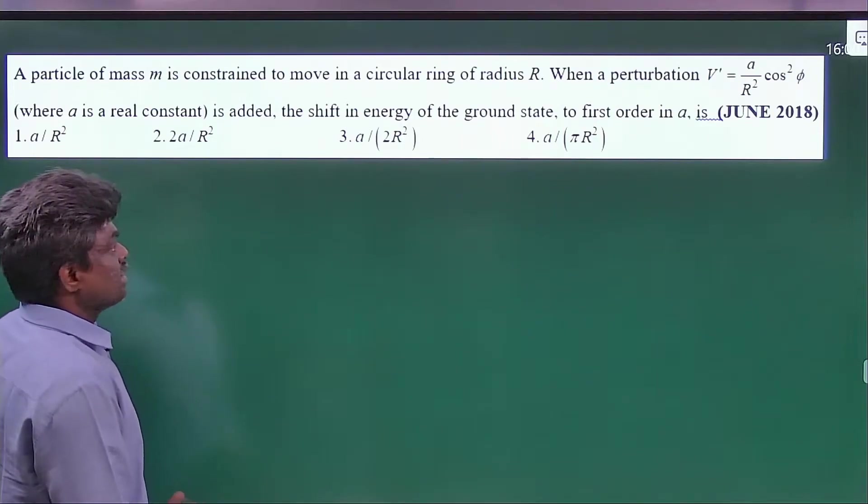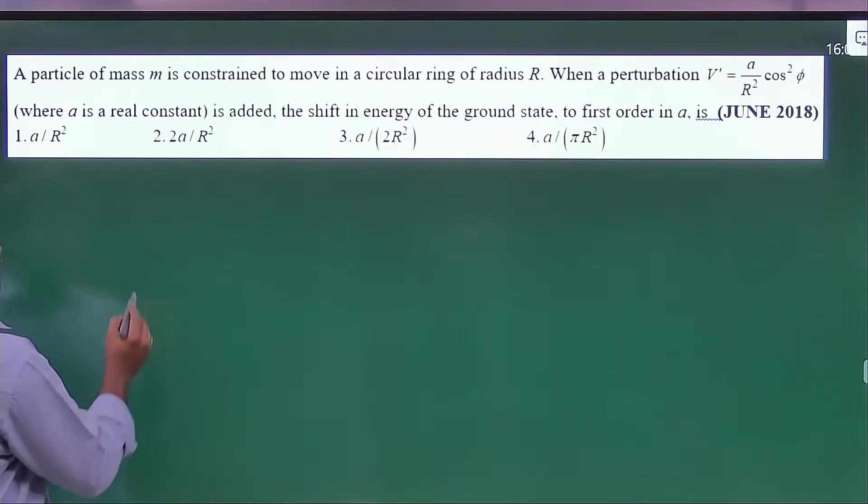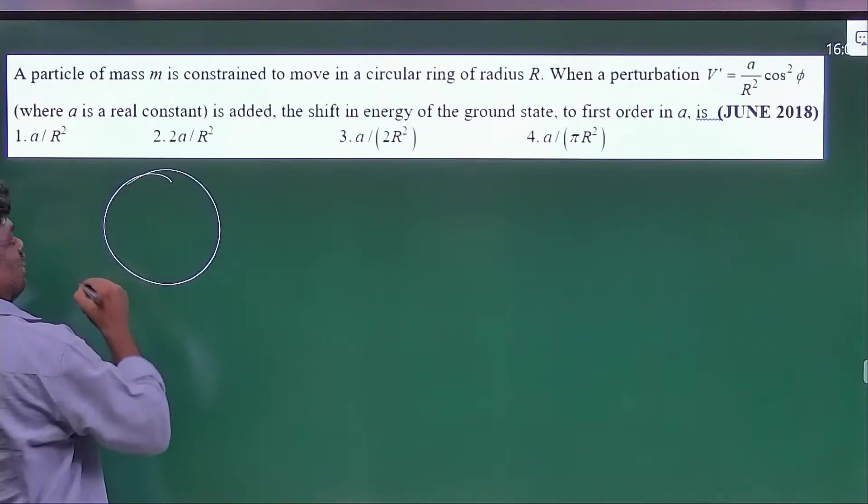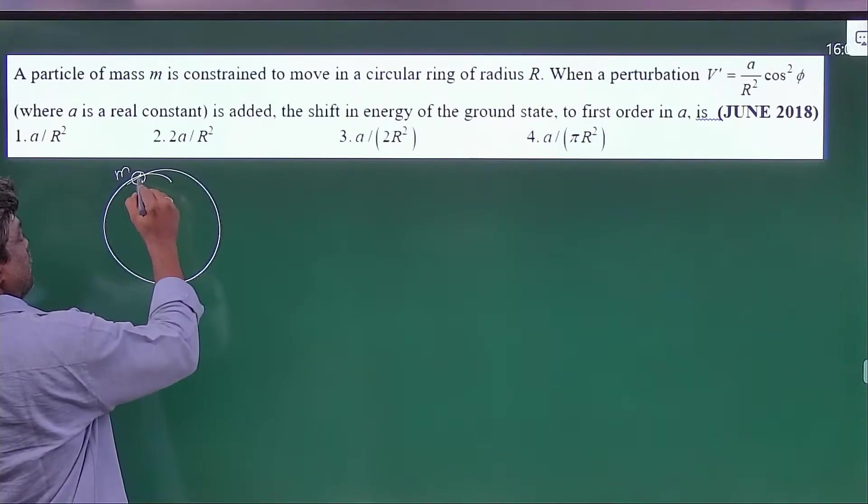Welcome to UV physics. This is a question from perturbation theory. Here they have given a particle of mass m is moving on a circular ring of radius capital R.